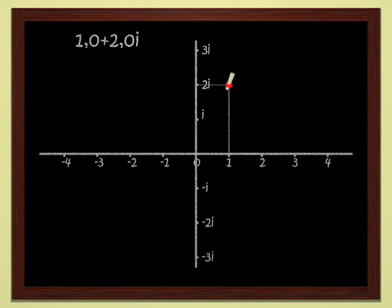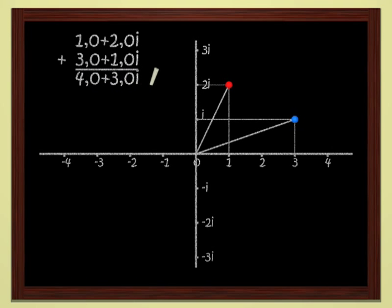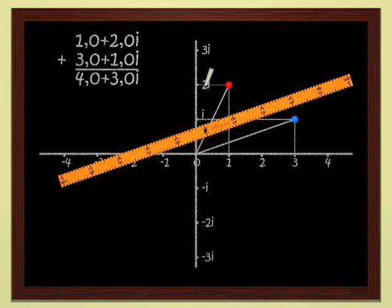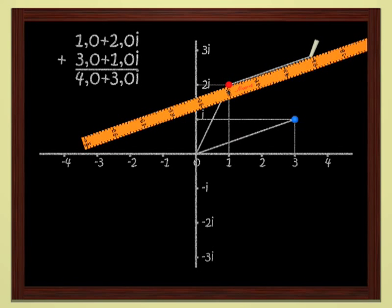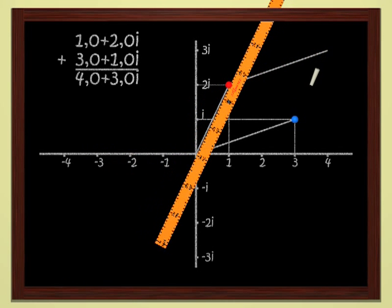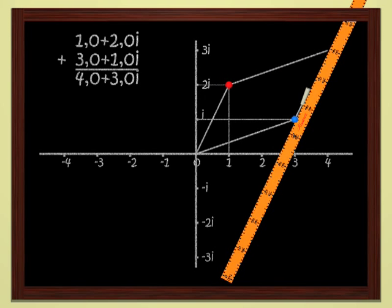Look at the red point, which is the point 1 plus 2i. Let's add 3 plus i, which is the blue point. Well, you add them just as schoolchildren do. That gives us 4 plus 3i. Geometrically, this is just addition of vectors. You see that it's no problem to add complex numbers.